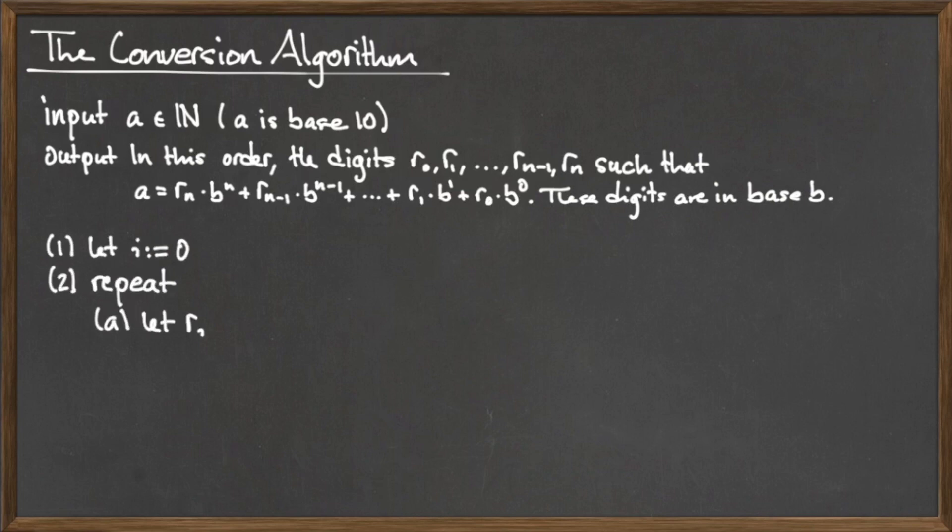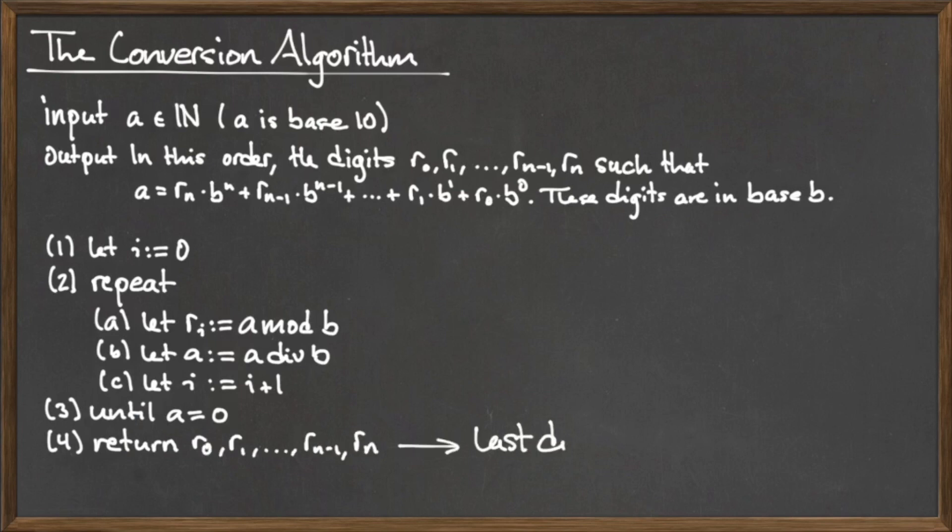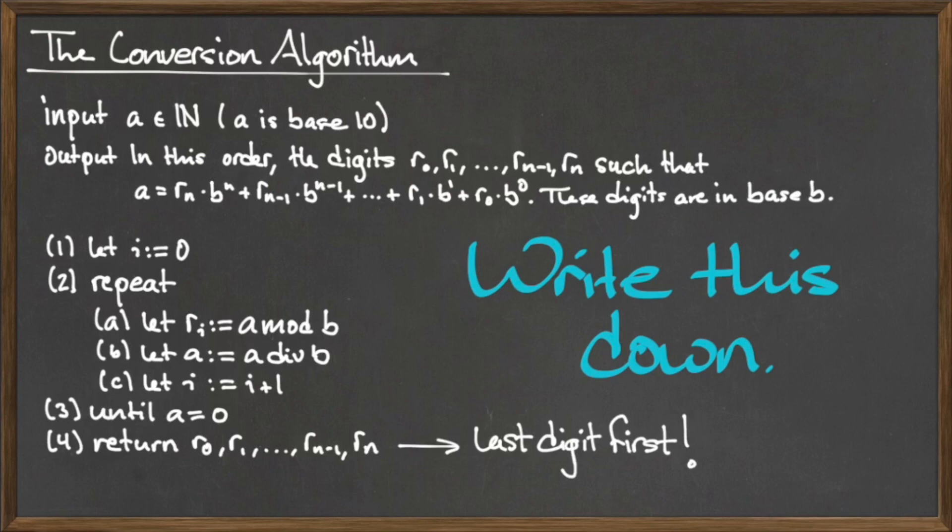The base 10 to base B conversion algorithm is the same as the base 10 to base 2 conversion algorithm, only instead we replace all of the instances of 2 with B.